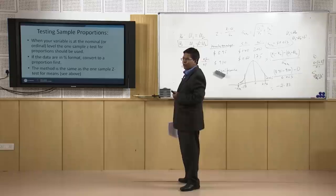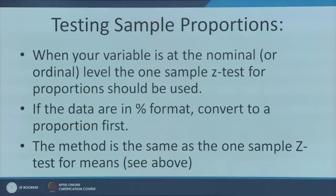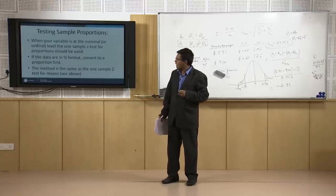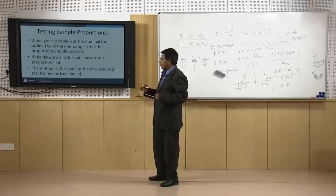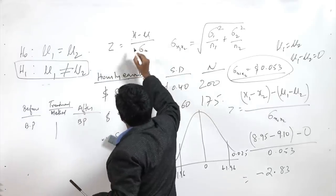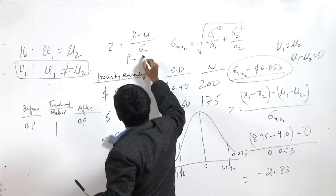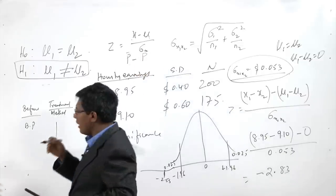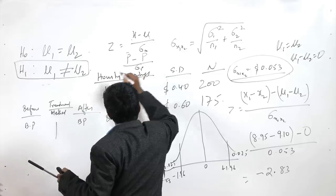What if you have sample proportions? When your variable is at a nominal or ordinal level, the one-sample test for proportions should be used. Proportion is in a P-by-Q form. If the data are in percentage format, first convert to a proportion format. The method is the same — instead of means, you will have proportions: P_sample minus P_population, with the standard error changing to sigma_P.